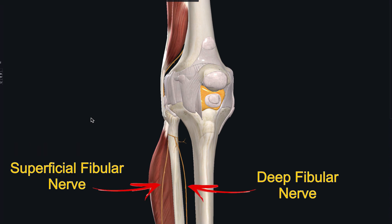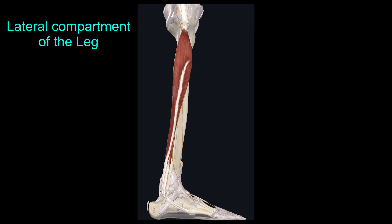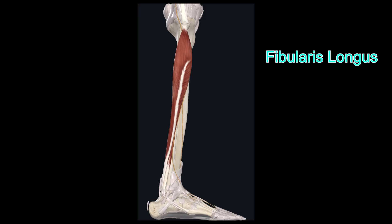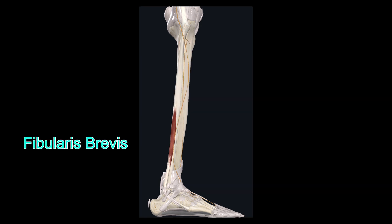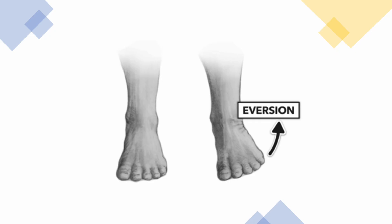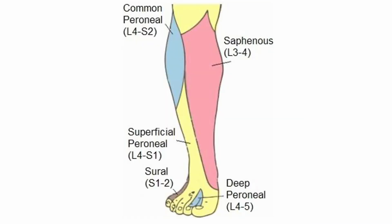The superficial fibular nerve supplies the lateral muscles of the leg, which are fibularis longus and fibularis brevis. Both muscles evert the foot and turn the sole outward. It also supplies most of the skin on the dorsal aspects of the foot and toes, except for skin on adjacent sides of the first and second toes, which is innervated by the deep fibular nerve, and skin on the lateral side of the foot and little toe, which is innervated by the sural nerve.